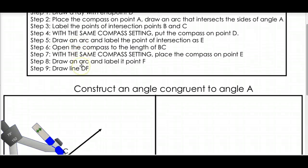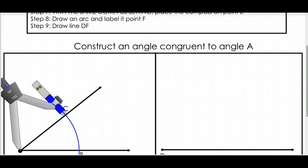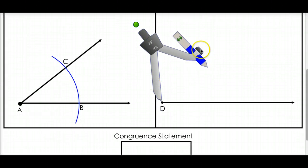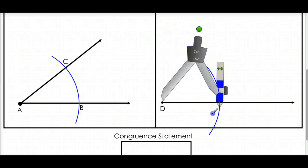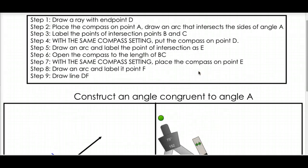The next part is with the same compass setting. So, keeping the same compass exactly the same, we're going to put it on endpoint D. We're going to move it over here. We're not changing how long it is. We're just moving it over. And what we're going to do is draw another arc. And it's going to intersect like that. We drew our arc. And this point, let's give it another name. We'll call it E. Sound good? Now, we've done this. Draw an arc and label the point of intersection E.